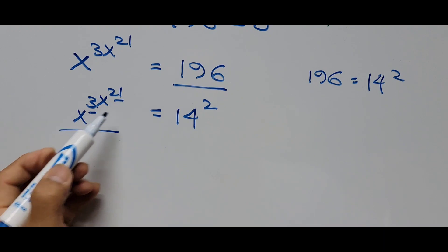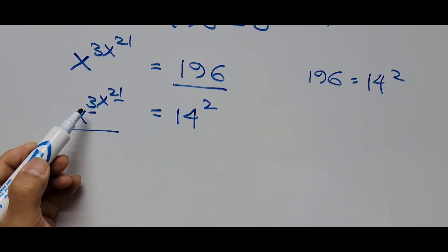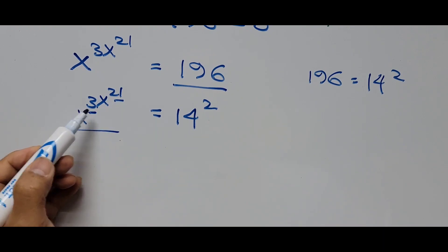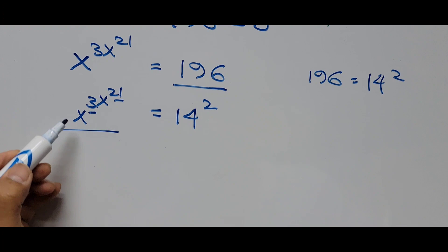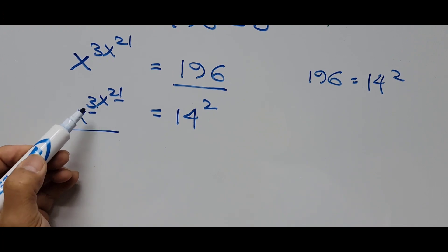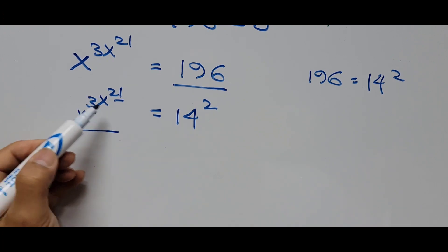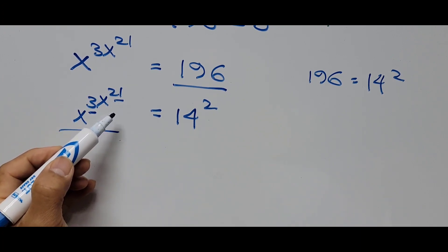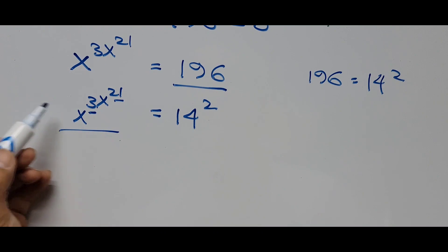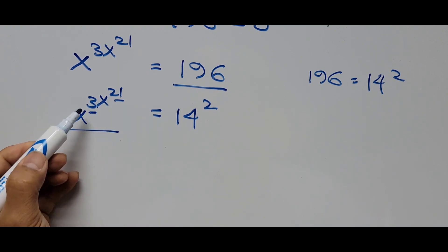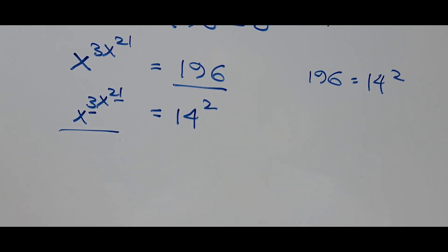What I mean is, we have 21 and 3 — we want to multiply something to 3 to make it 21. So the end result would be x to the 21 raised times x to the 21. To achieve that goal, we need to multiply a number to 3 to make it 21. So what number is that? That is 7.